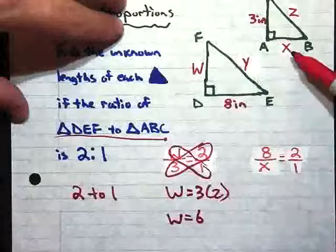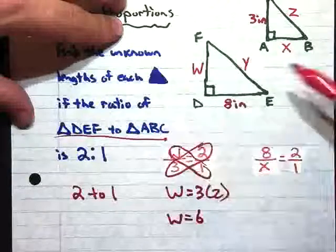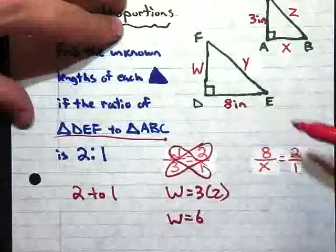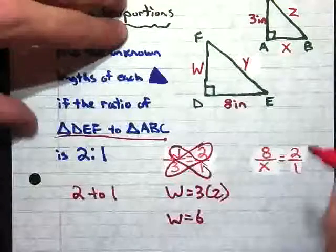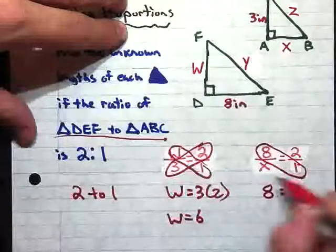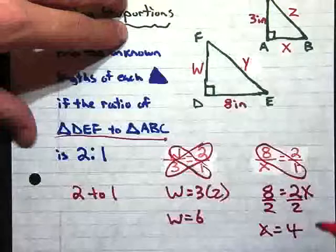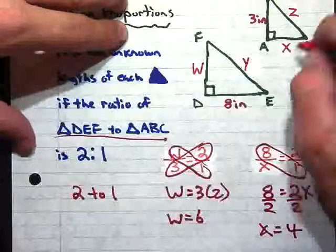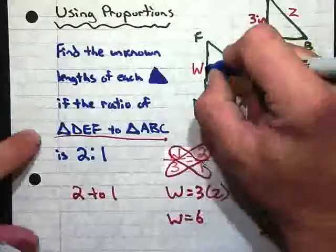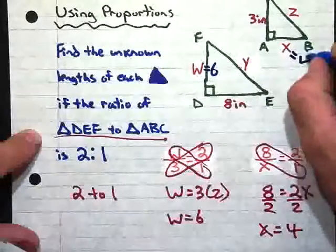And then over here, now we want to solve for X. So we do, remember it's our large triangle to our small triangle, so it's 8 over X, because those 2 sides correspond together. So 8 over X equals our ratio, which is 2 to 1, and we would cross multiply. So 8 times 1 is 8, equals 2 times X. So we divide both sides by 2, so X equals 4. So we have 2 sides of our triangle, and what I'm going to do here is I'm actually going to rewrite these lengths in here. So this W equals 6, and X equals 4.